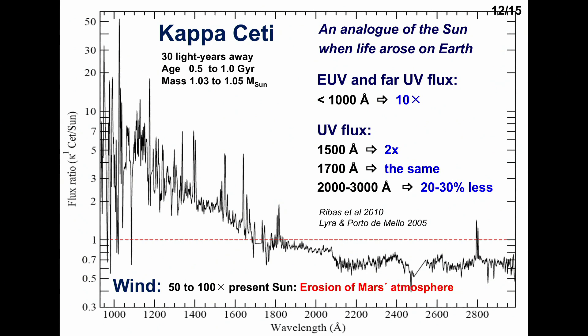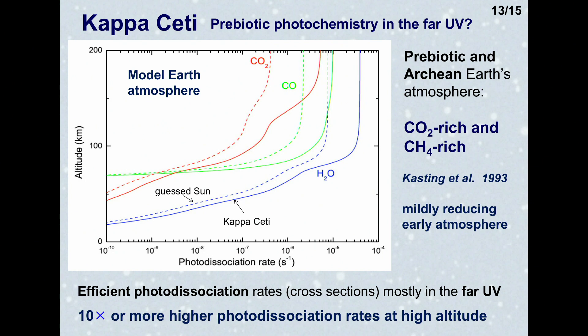κ Ceti has certainly been relevant to the evolution of Mars. Most cross sections for absorption of important molecules in the probable Archean atmosphere — like carbon dioxide, water vapor, and methane — lie in the far UV. Considering the sun without these excess emissions versus κ Ceti as an analog for the early sun, we find much higher photodissociation rates for the mildly reduced early atmosphere. This could be driving interesting pre-abiotic, pre-organic chemistry. It has even been proposed that one pathway for the formation of ribonucleotides and pyrimidines — the basis for DNA and the genetic code — might use far UV photons to produce the initial chemical steps that are difficult to achieve otherwise.